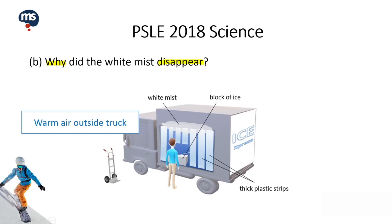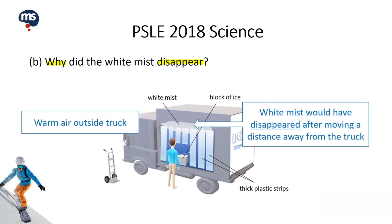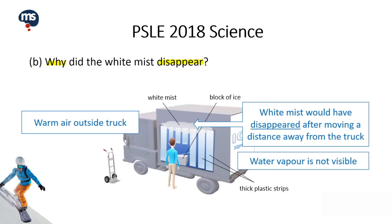Let's take a look at Part B: Why did the white mist disappear? The white mist would have disappeared after moving a distance away from the truck. The white mist disappeared because it had evaporated to form water vapour, which is not visible. Evaporation refers to the change from liquid to gas.